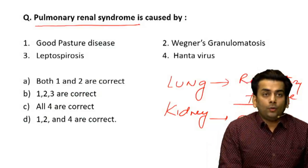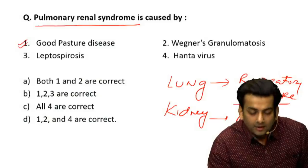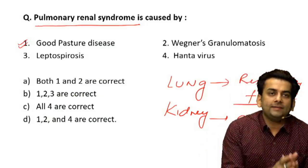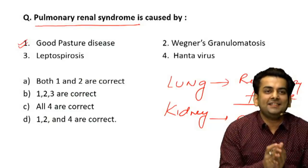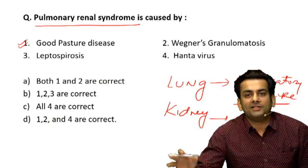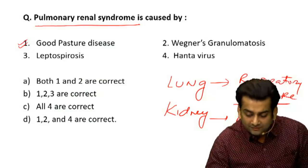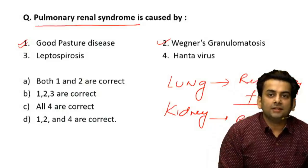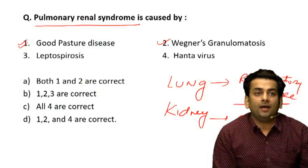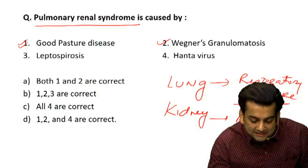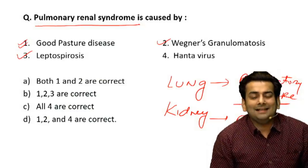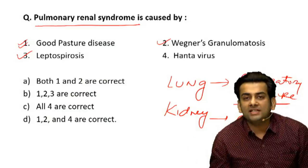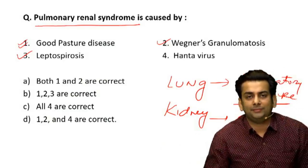Goodpasture's disease is an antibody-mediated glomerulonephritis where an autoantibody is directed against the NC1 domain of the alpha-3 chain of collagen type 4. Wegener's granulomatosis is a c-ANCA positive small vessel vasculitis. Leptospirosis is a bacterial disease caused by Leptospira, and Hantavirus is a zoonotic disease belonging to the family Bunyaviridae.